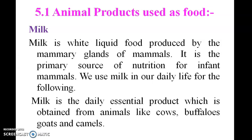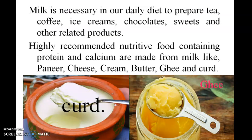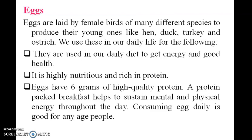Milk is a white liquid food produced by the mammary glands of mammals. It is the primary source of nutrition for infant mammals. We use milk in our daily life to prepare tea, coffee, ice cream, chocolate, sweets, and other dairy products. Milk products include paneer, cheese, cream, butter, and curd.